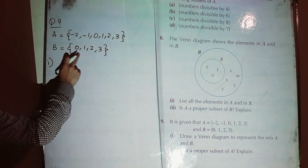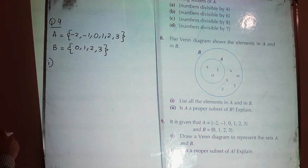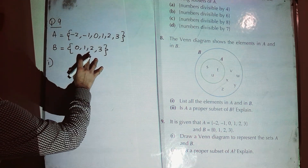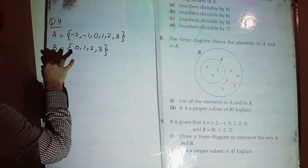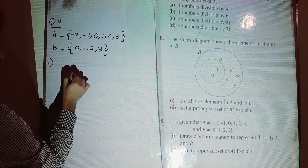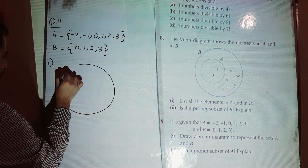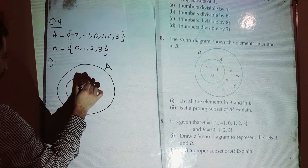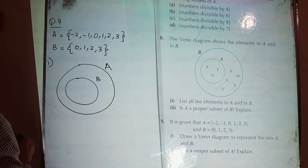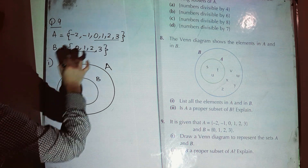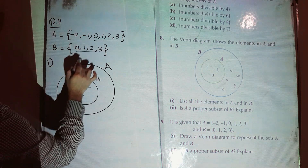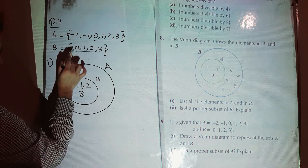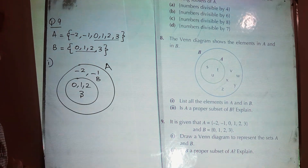You can see B which is {0, 1, 2, 3} — these elements are part of A. A also has 0, 1, 2, 3, so that means B is in A. We have got a circle for A, and the circle for B will be inside A. B has got 0, 1, 2, 3 while A has got 0, 1, 2, 3 as well as -2 and -1. This is how you represent it in a Venn diagram.